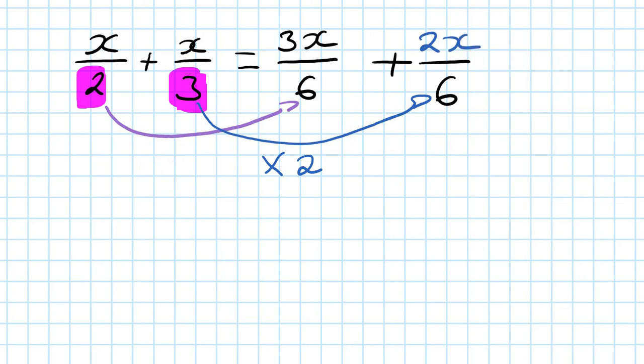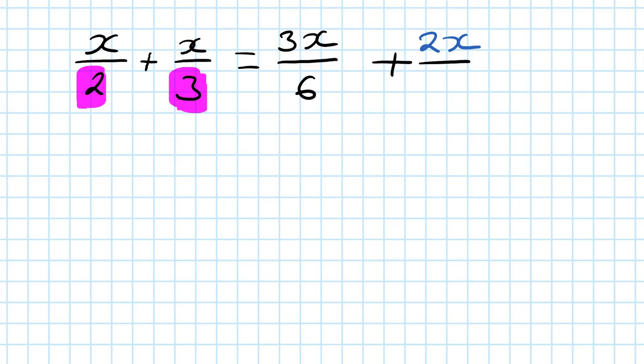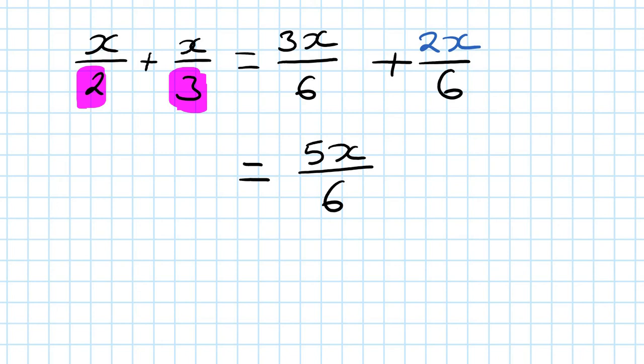Now the next step is to collect like terms. We have the common denominator 6, so the bottoms are the same — just add the tops: 3x plus 2x is 5x. So the answer is 5x over 6, just like adding fractions.